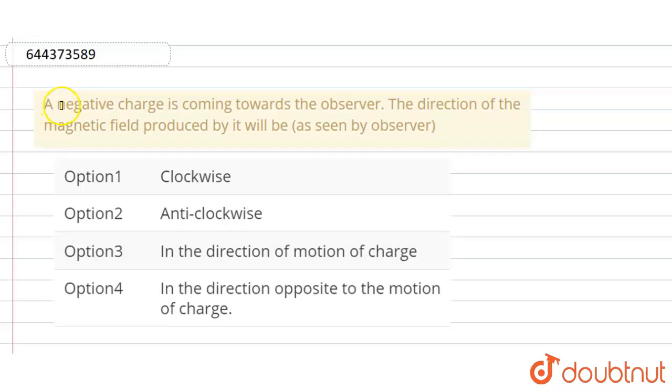Hello everyone, a negative charge is coming towards the observer. The direction of the magnetic field produced by it will be as seen by the observer.